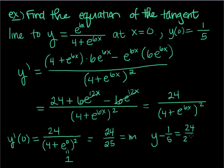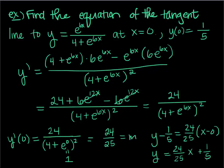When x is 0, plugging into y: e to the 0 is 1, so y equals 1 over (4 plus 1) equals 1 fifth. So the equation of the tangent line is y minus 1/5 equals (24/25)(x minus 0), which simplifies to y equals (24/25)x plus 1/5. The last thing I want to talk about is something in this section on page 237, dealing with e and the idea of solutions to what we call a differential equation.